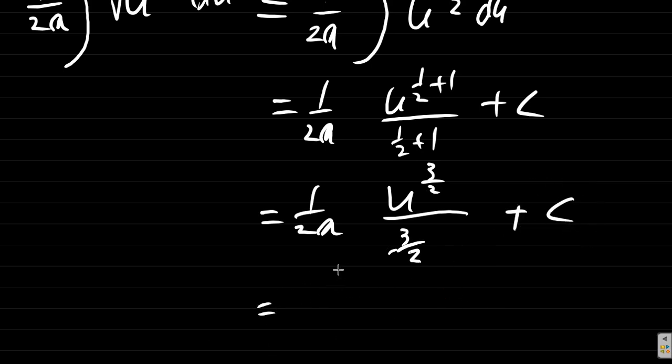So this becomes 1 over, if you take this out here the twos will cancel, you have 3a, 1 over 3a.